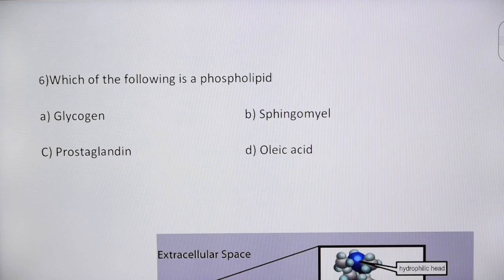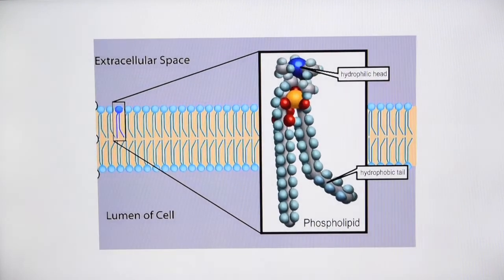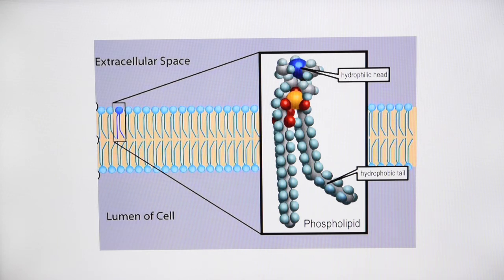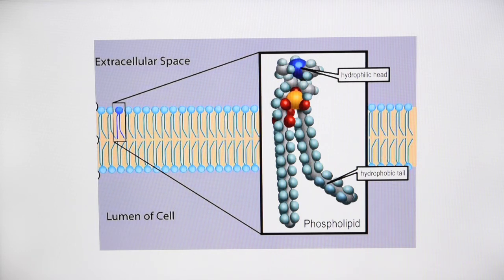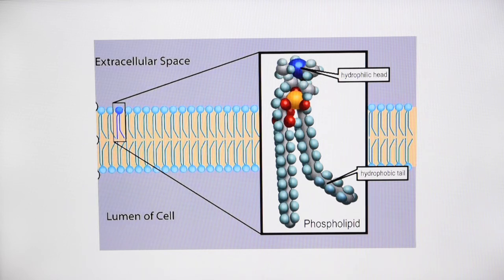Next question: which of the following is a phospholipid? Options are glycogen, sphingomyelin, prostaglandin, and oleic acid. Phospholipids are a class of lipids that form major components of cell membranes. They form lipid bilayers due to their amphiphilic characteristic — being both hydrophilic and hydrophobic. The structure contains two hydrophobic fatty acid tails and a hydrophilic head with a phosphate group, joined by a glycerol molecule. The answer is sphingomyelin.